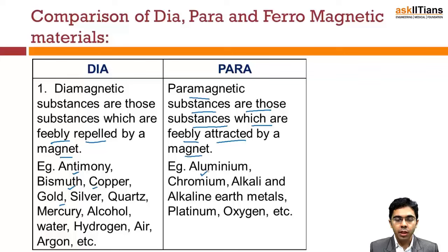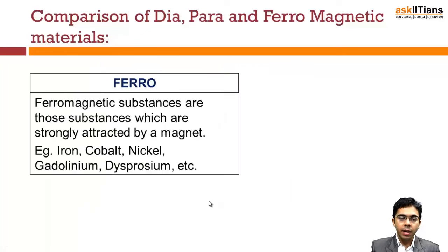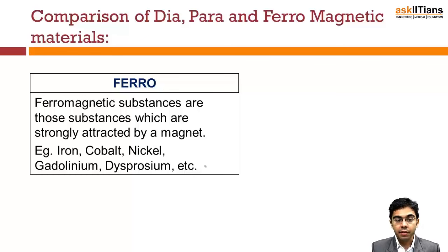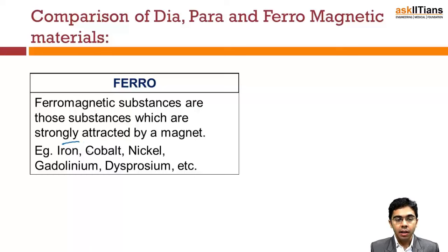Examples of paramagnetic materials include aluminium, chromium, alkalies, and alkaline earth materials. Ferromagnetic materials are substances which are strongly attracted — not feebly like paramagnetic — but strongly attracted. Examples include iron, cobalt, and nickel.